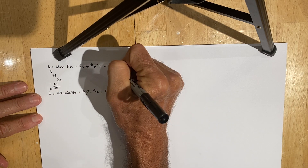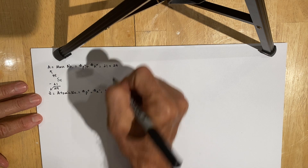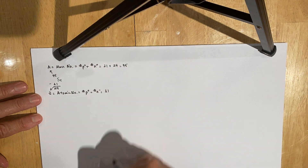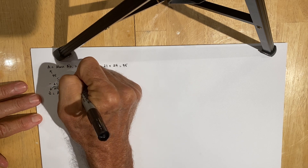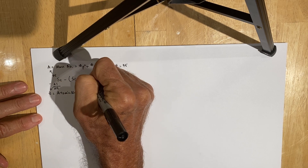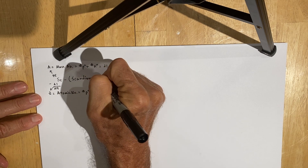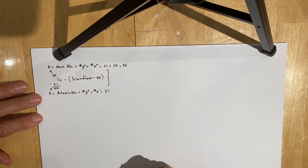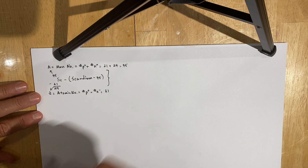So this particular isotope has 24 neutrons, thus the mass number is 45. We identify this particular isotope of scandium as scandium-45, because isotopes are identified based on their mass number.